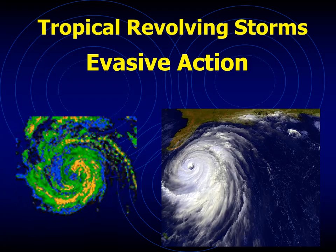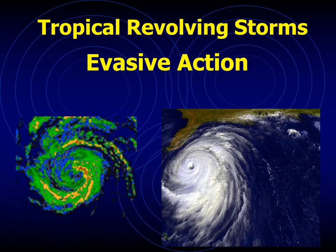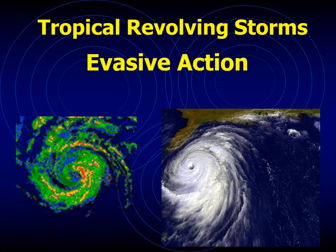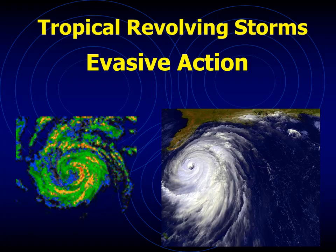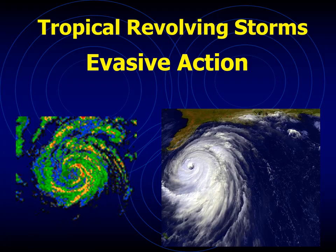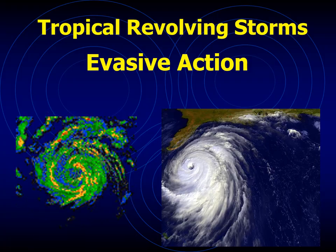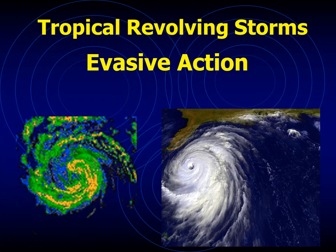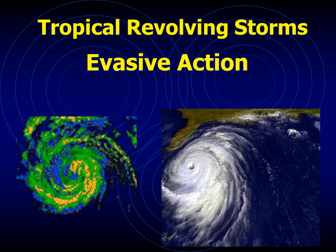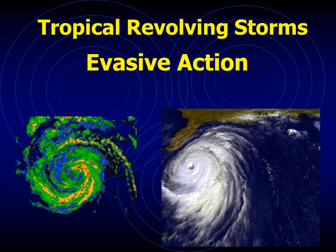In my previous video, I talked about the theory behind the formation of a TRS. In today's video, I want to talk about understanding the movement of the TRS in the northern and the southern hemisphere, deciding on the evasive action and how to take it. What principles should you be using to avoid tropical revolving storms or TRS at sea?